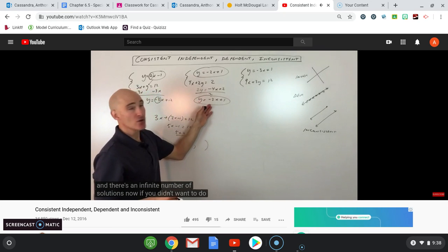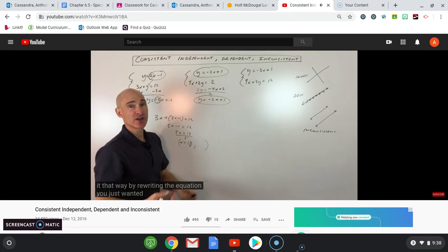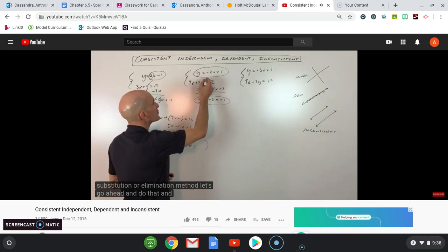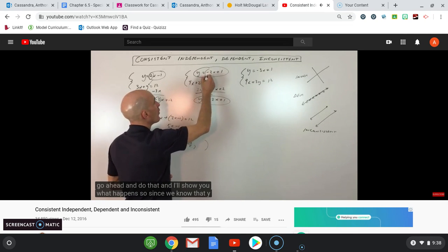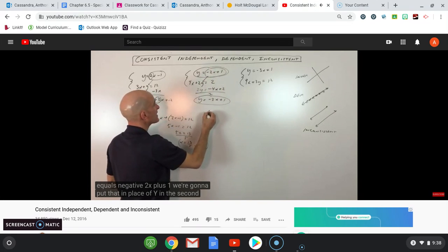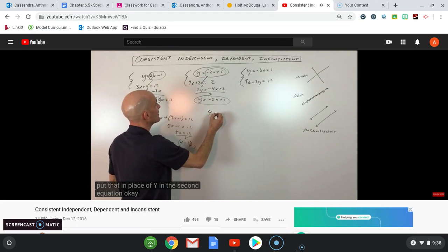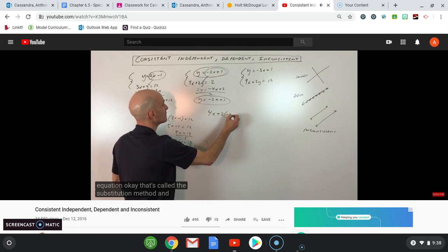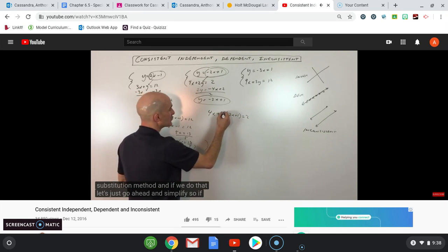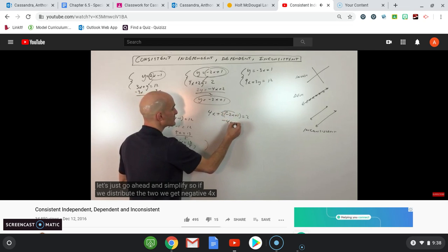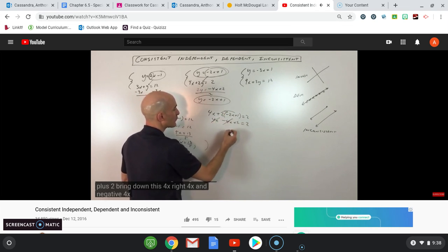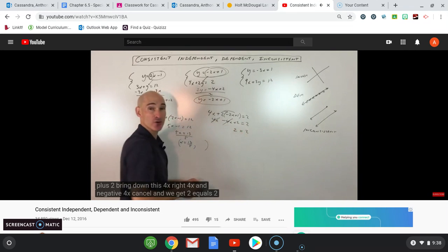If you didn't want to do it that way by rewriting the equation and just wanted to jump right into the substitution or elimination method, let's go ahead and do that. Since we know that y equals negative 2x plus 1, we put that in place of y in the second equation — that's the substitution method. Distributing the 2 gives negative 4x plus 2, and 4x and negative 4x cancel.